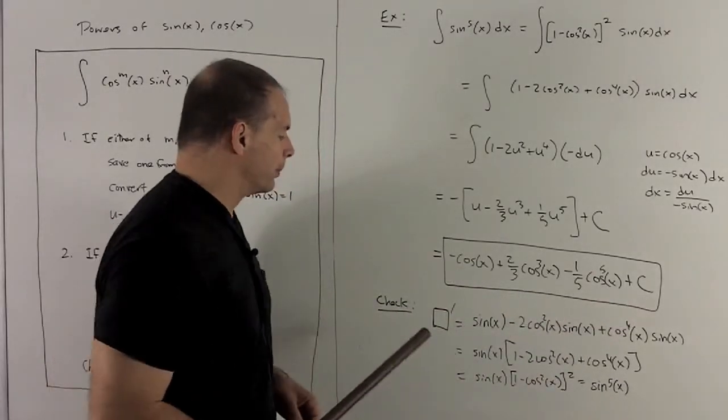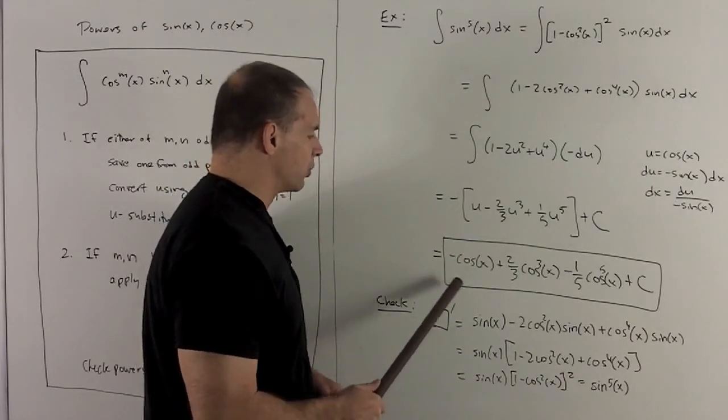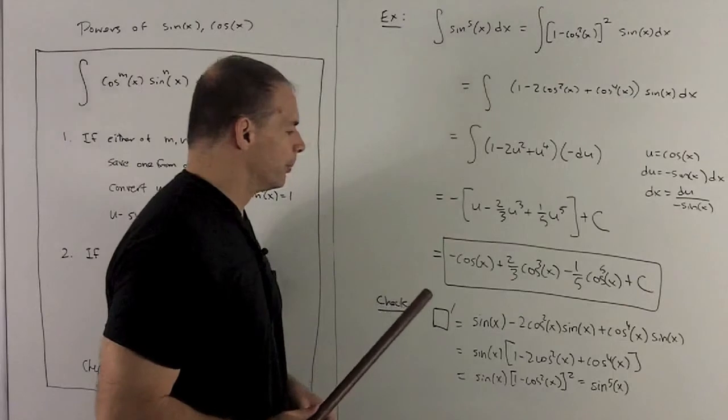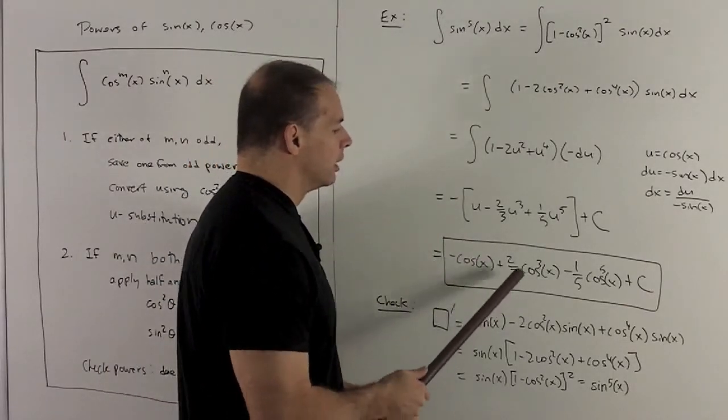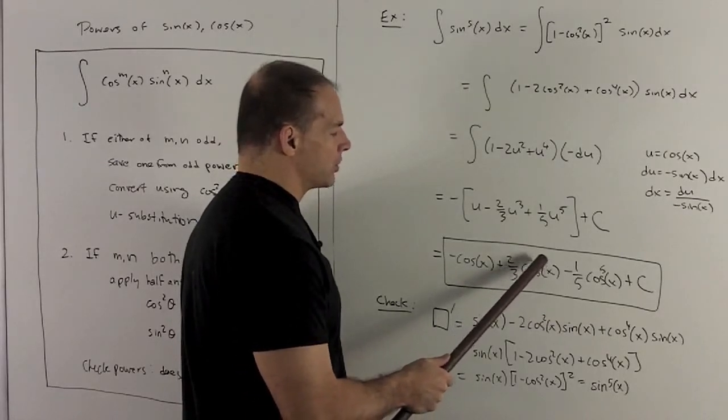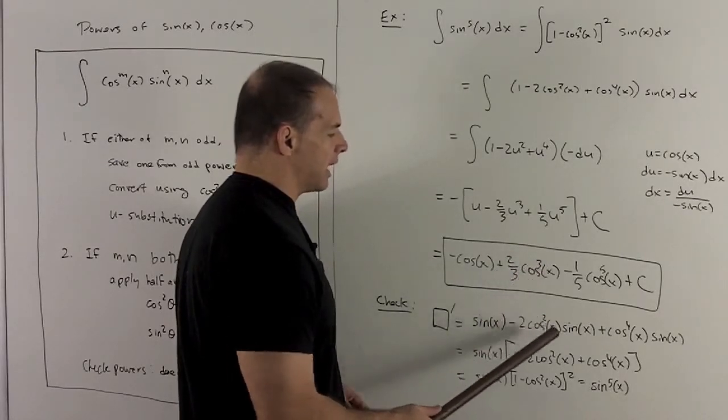Of course, we want to check our answer. So what I want to make sure is, if I take the derivative of what's inside the box, it's going to equal what we started with. So derivative of cosine is minus sine. Cosine cubed, I bring the 3 down. We're going to have a cosine squared, and then derivative of the inside is a minus sine x.